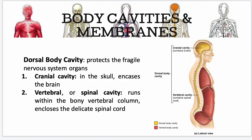Let's go through everything again. First is your dorsal body cavity — this cavity protects your fragile nervous system organs. Your cranial cavity is in the skull and encases your brain. Your vertebral or spinal cavity runs within your bony vertebral column and encloses your delicate spinal cord.